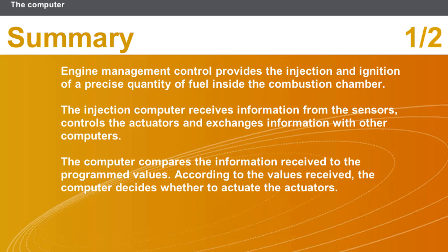In this section, we covered the following points. Engine management control provides the injection and ignition of a precise quantity of fuel inside the combustion chamber. The injection computer receives information from the sensors, controls the actuators, and exchanges information with other computers.